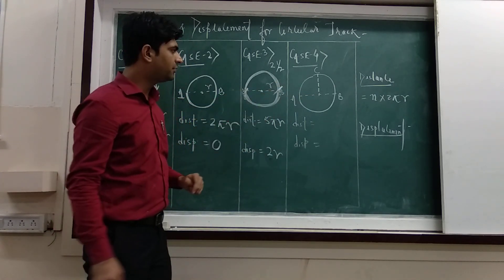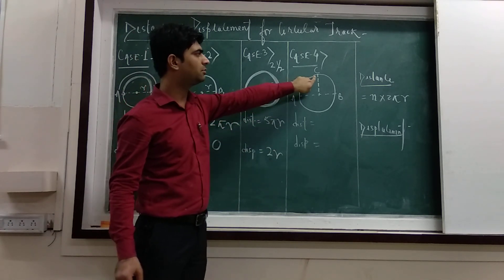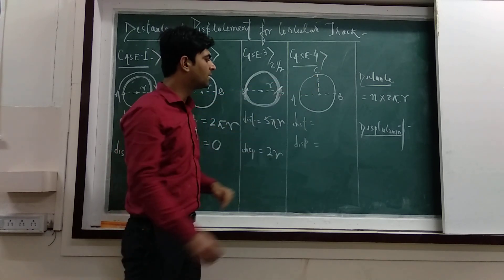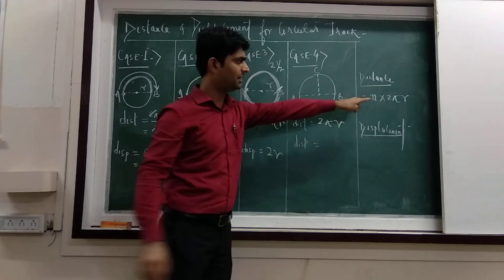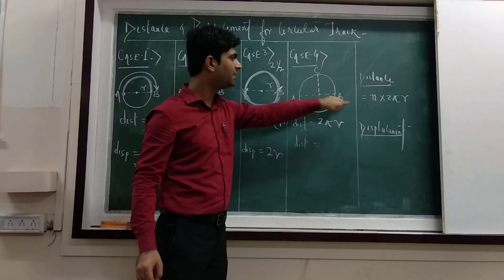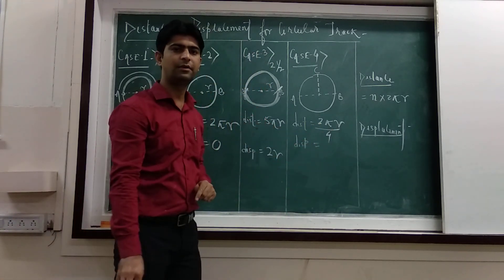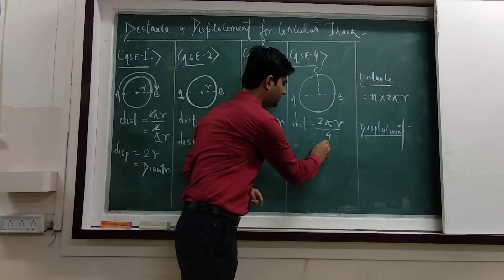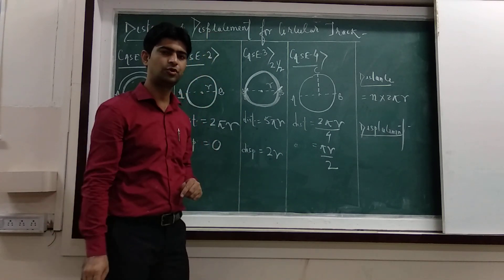Last case — case number 4. Suppose we are starting from point A and just reaching point C. This is a quarter circle — that is one fourth of the circle. For one fourth of the circle, the circumference is 2πr and n here is one fourth. So dividing by 4 gives the distance as πr divided by 2.